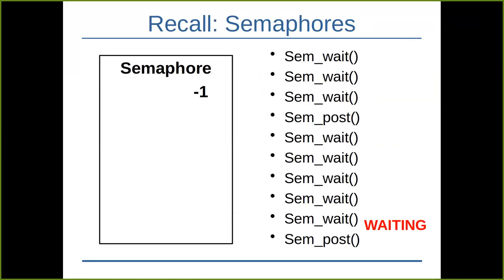When sem_post is called, one thread wakes up if any thread was waiting — that is, if the semaphore value was less than zero. The value gets incremented. Until we reach zero, sem_wait won't block. Only when the value reaches zero does the next thread have to block — the semaphore value goes to minus one, then minus two for the next thread, and so on. sem_post at any point increments the value, and if a thread was waiting it wakes up exactly one thread.